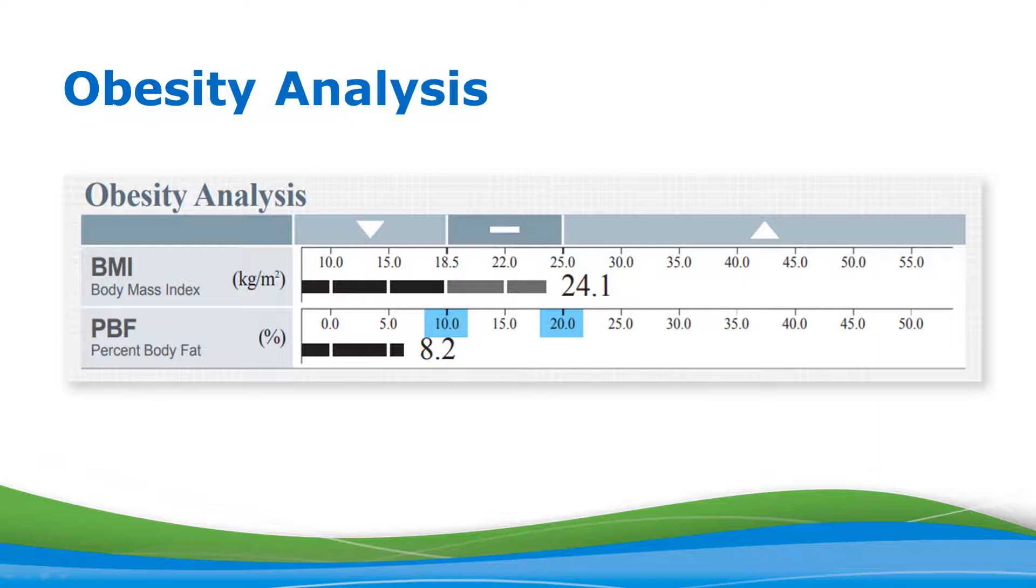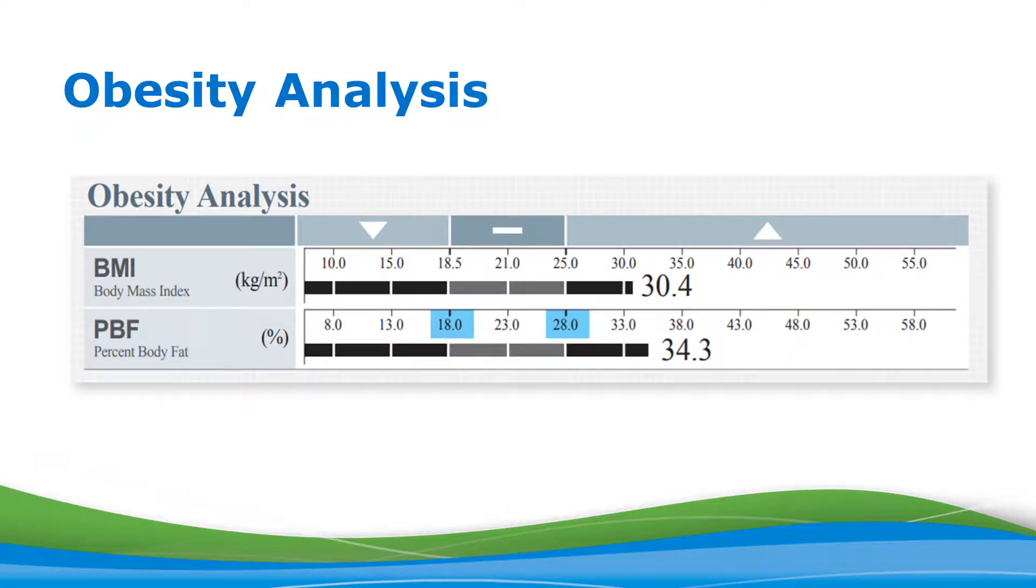For the percent body fat, the ranges differ for men and women, as women tend to carry more body fat than men due to different gender differences. The range for men is shown to be between 10 to 20%, calculated by taking total body fat in pounds and dividing by total body weight. In our example, this male is sitting at 8.2%, which is slightly below the target range—not necessarily a bad thing because we're talking about body fat. The range for females is 18% to 28%.